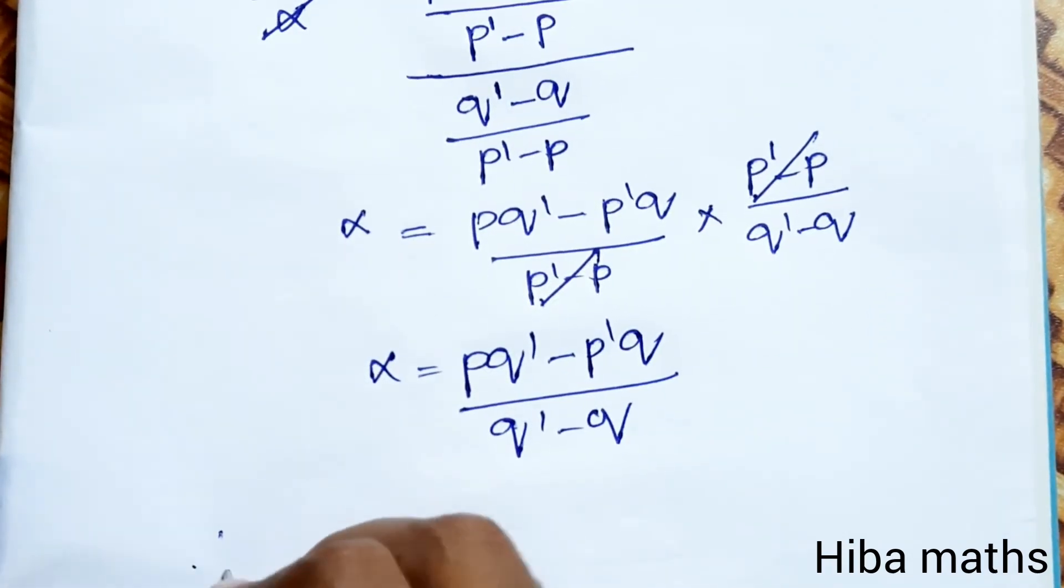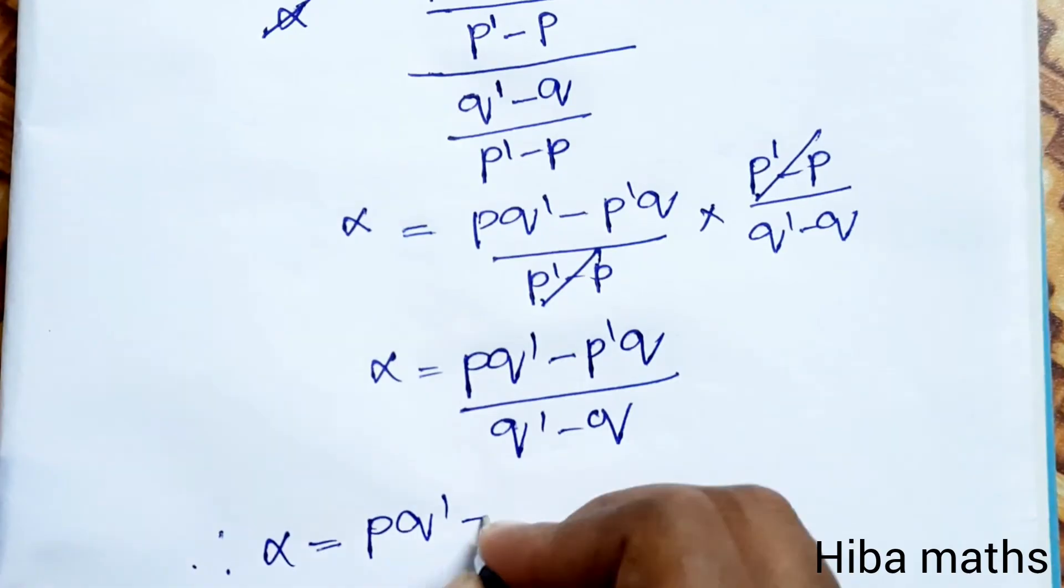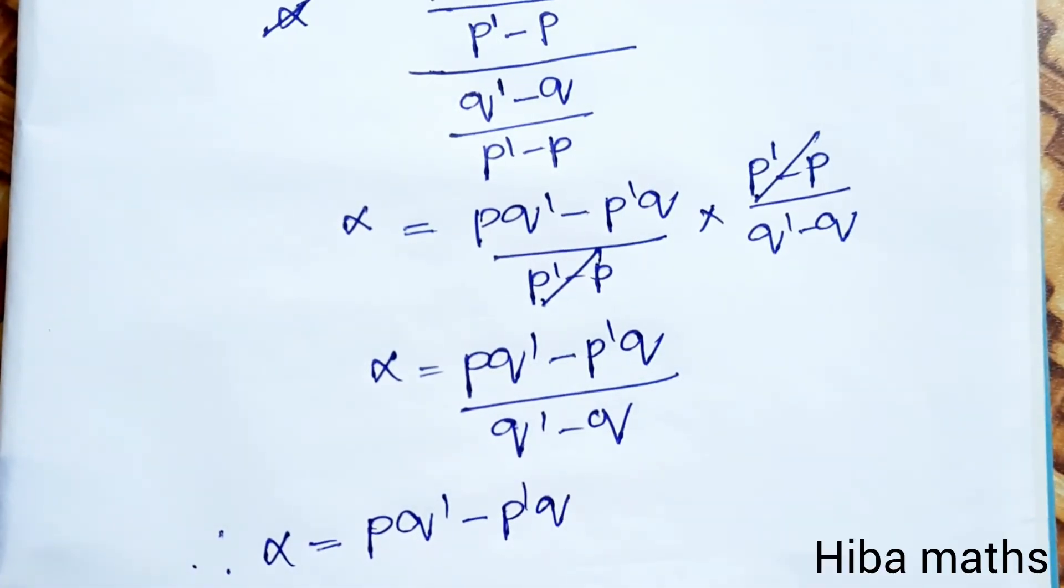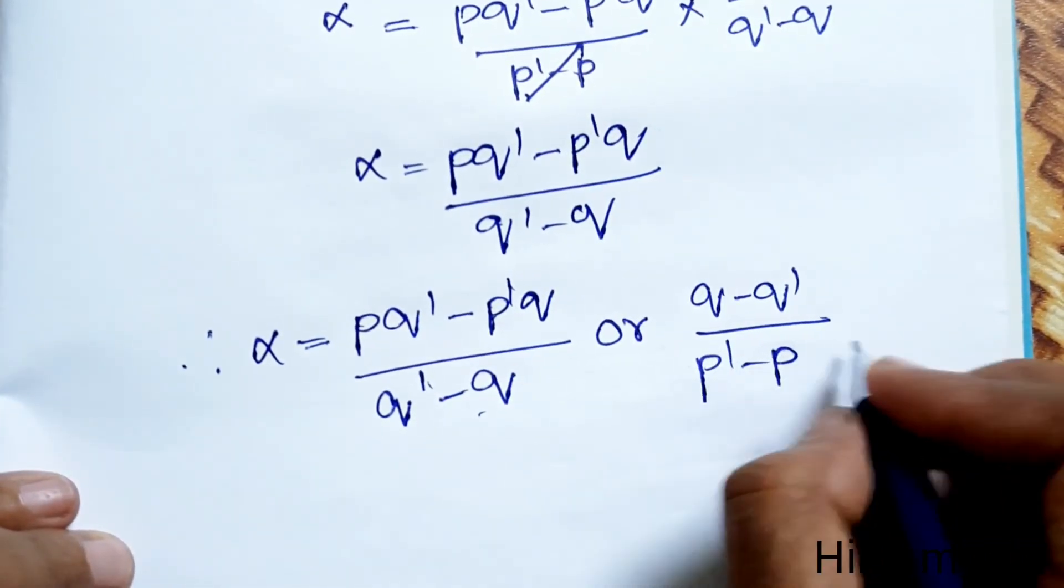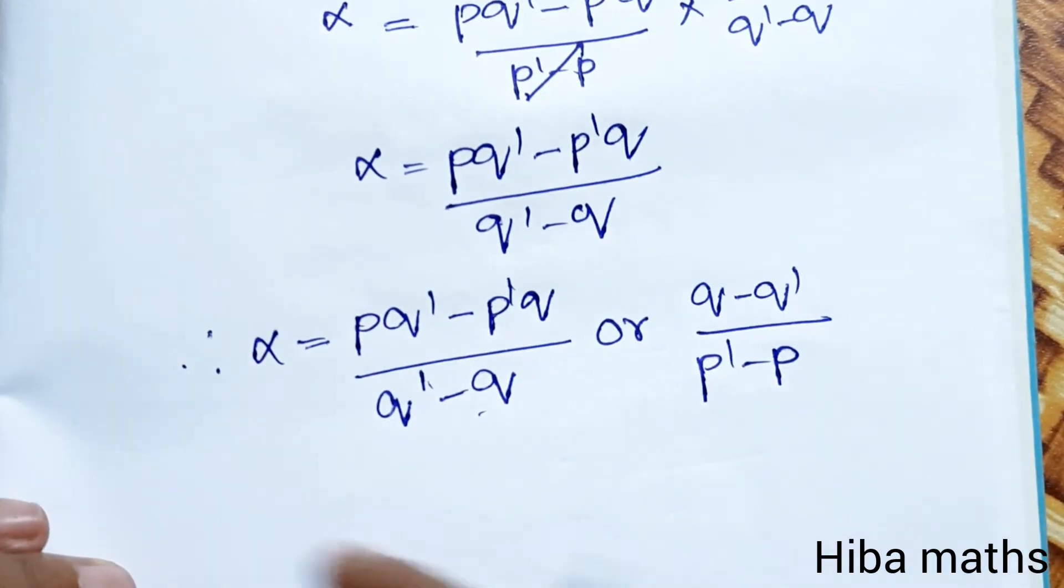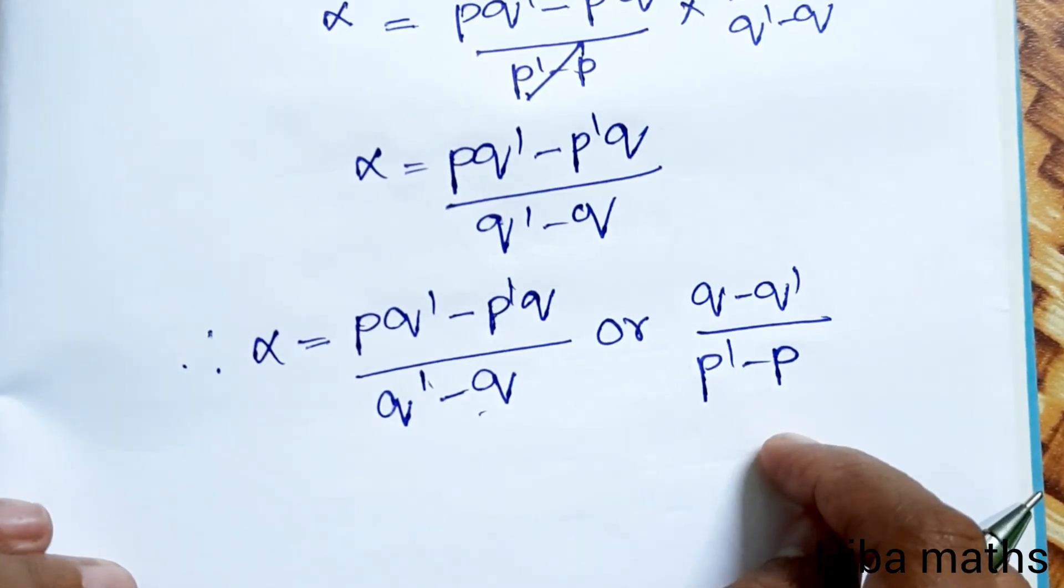Therefore, α = (pq' - p'q)/(q - q') or (q - q')/(p' - p). Hence proved. Thank you so much for watching.